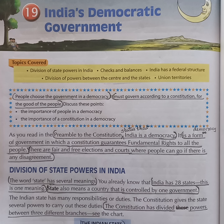Hello everyone, today we will be studying the 19th chapter of class 5 social studies. The chapter's name is India's Democratic Government.